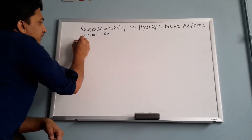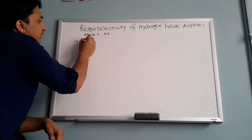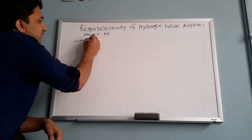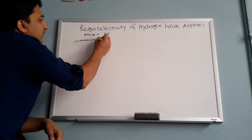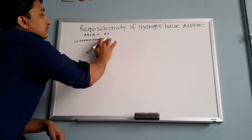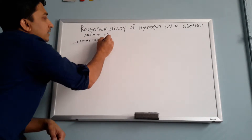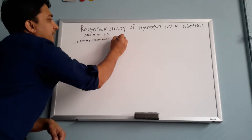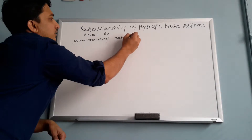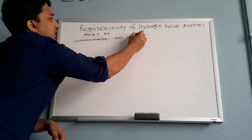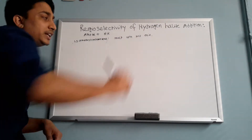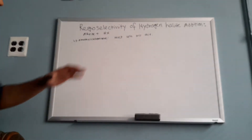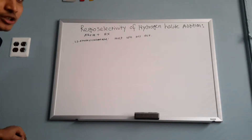So for example, if you have 1,3-dimethylcyclopentene reacting with hydrochloric acid — show me the mechanism. How are you going to show the mechanism?